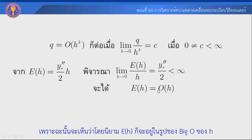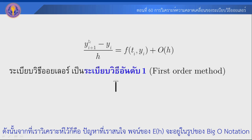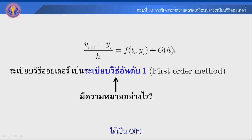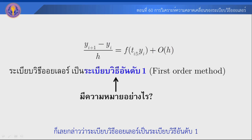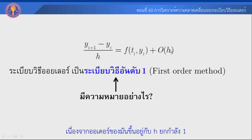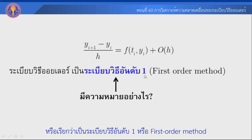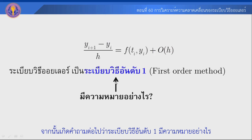Therefore e_h is proportional to h, so the limit e_h divided by h equals a finite constant. This confirms that the Euler method is a first-order method, meaning the local truncation error is of order O(h).